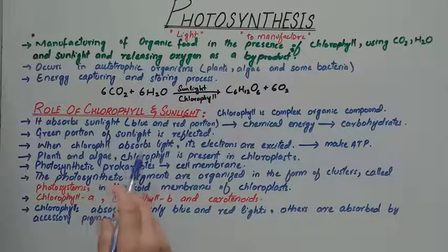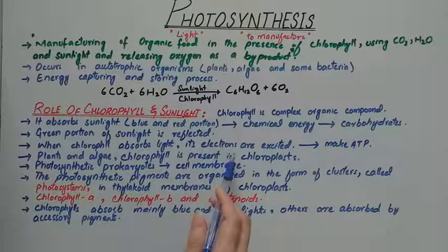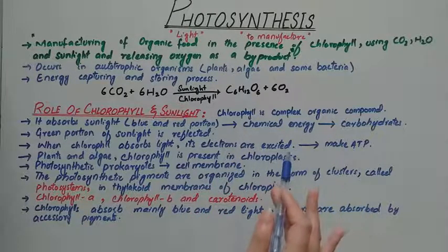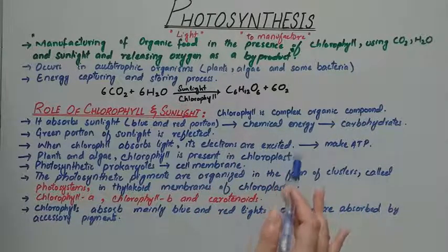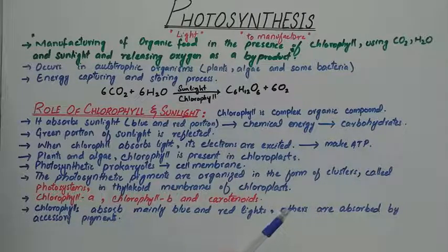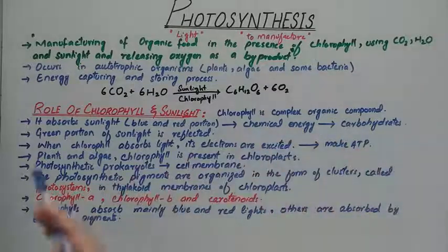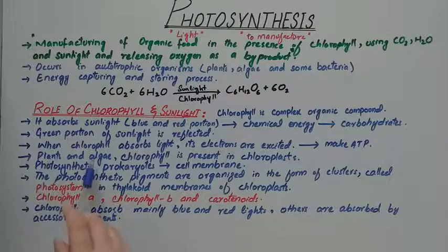When chlorophyll absorbs light, its electrons are excited. After the excitation of the electron, the energy is used to make ATP. This excited electron energy is used to make ATP, which is then utilized by plants and algae.